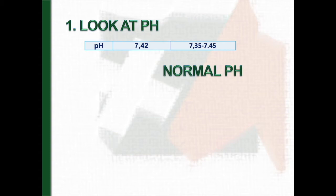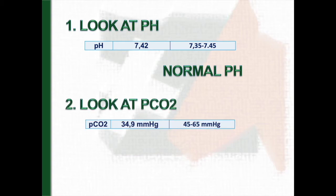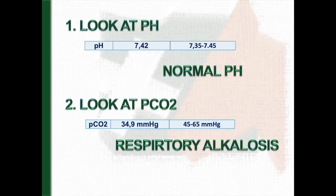The second step is to look at the pCO2 to assess the respiratory component. In this case, it is 34.9 below the lower limit of normality. Therefore, Macarena has respiratory alkalosis.